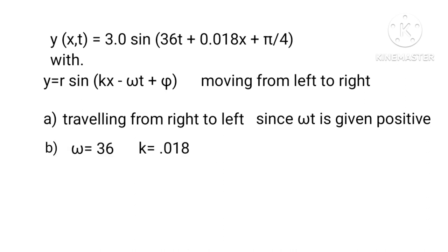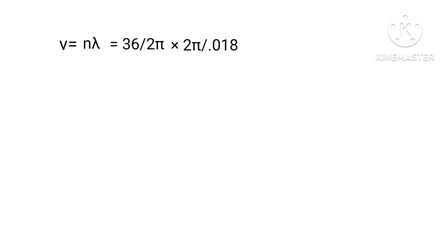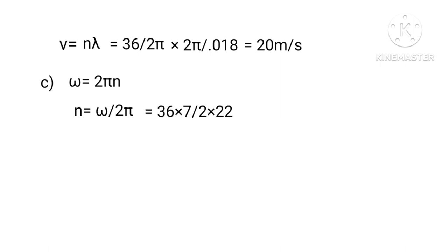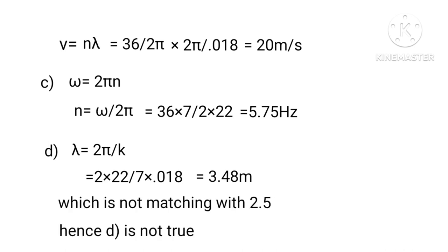From comparison: ω = 36 rad/s, k = 0.018 rad/cm. Wavelength λ = 2π/k = 2π/0.018 and ω = 2πn gives n = 36/(2π). Wave speed v = nλ = (36/2π) × (2π/0.018) = 36/0.018 = 2000 cm/s = 20 m/s, confirming option (b). Frequency n = ω/(2π) = 36/(2π) ≈ 5.73 Hz, so option (c) is also true. For (d), λ = 2π/0.018 ≈ 348 cm, not 2.5 cm, so option (d) is not true.